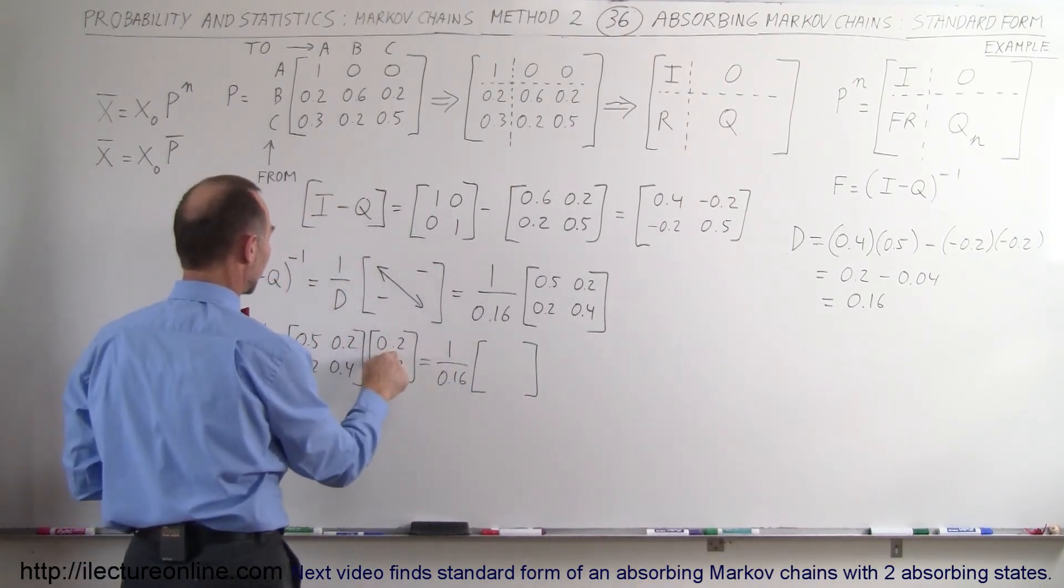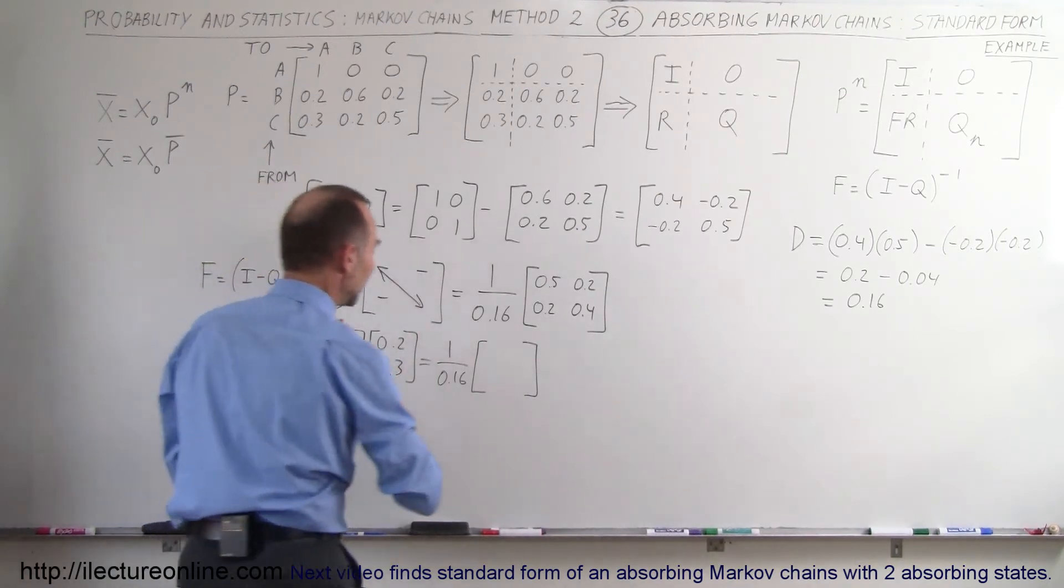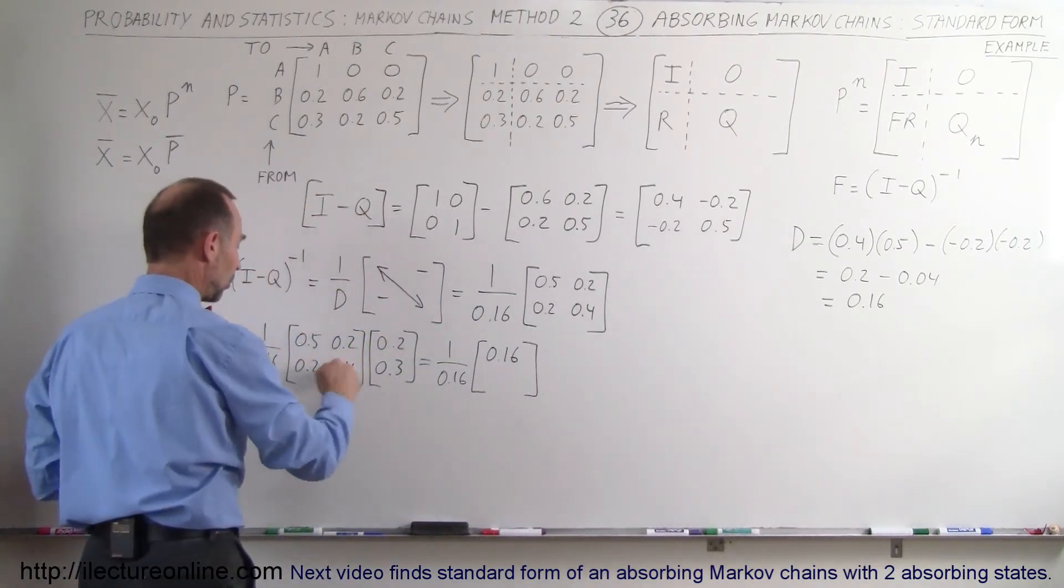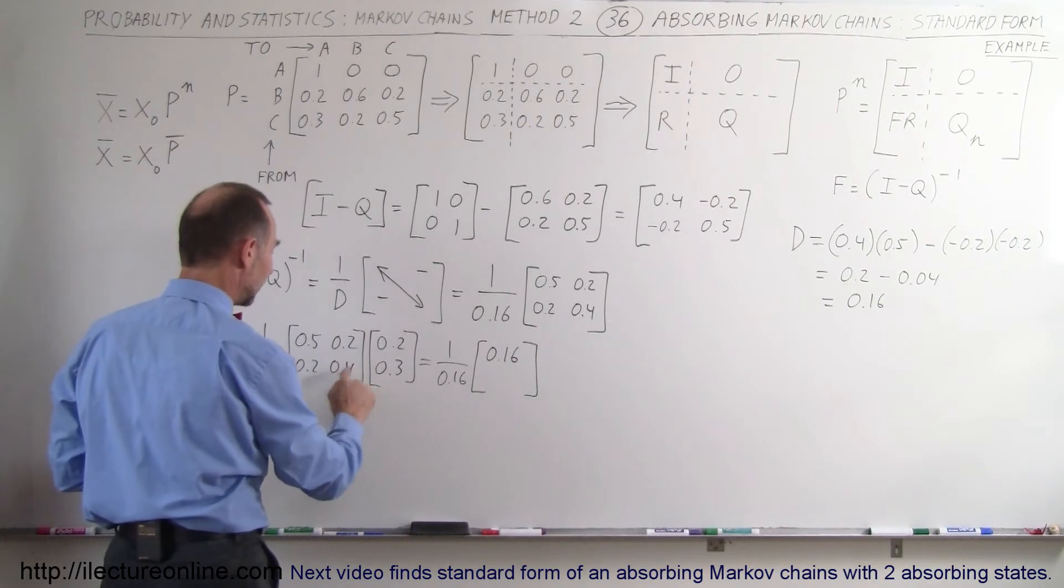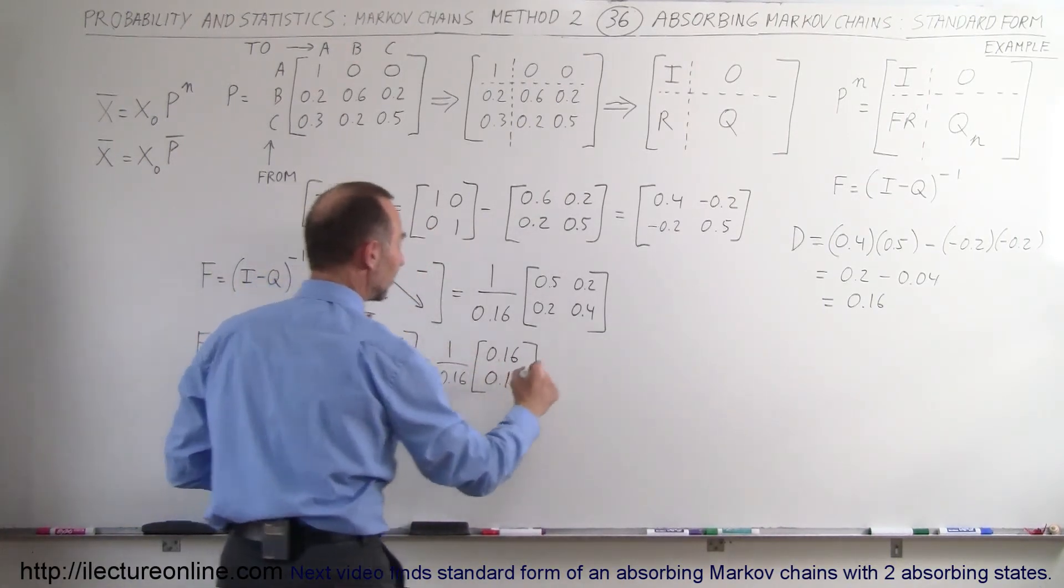So 0.5 times this is 0.1 and this times this is 0.06, that would be 0.16. And this row times this column gives us 0.2 times 0.4 is 0.04 and this is 0.12. This also gives us 0.16. Now we'll multiply this times this.